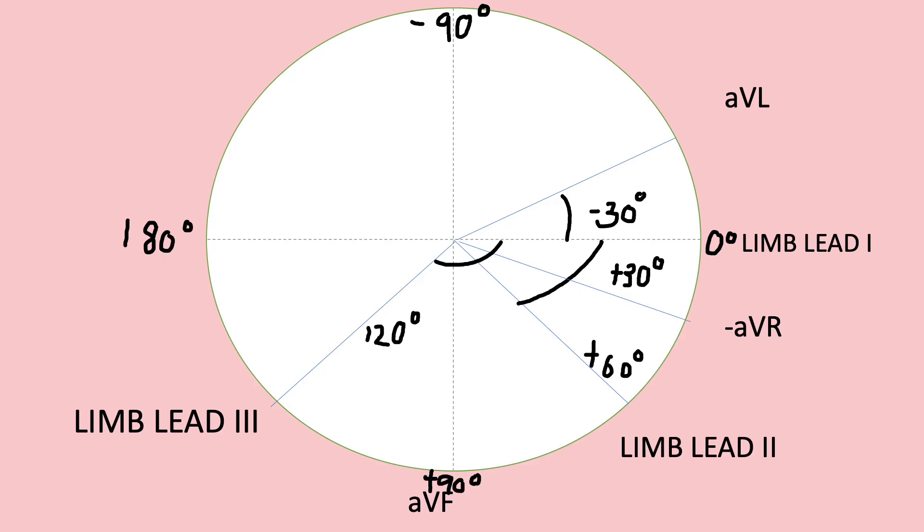So in a normal person, the mean QRS axis should be in between negative 30 degrees to 110 degrees. Any value that is less than negative 30 degrees and between negative 30 degrees to negative 90 degrees would be known as left axis deviation. Left axis deviation is a good indicator of left ventricular hypertrophy.